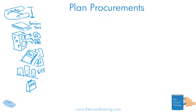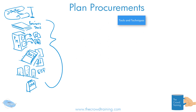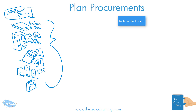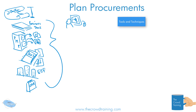Those are the inputs. Now let's move on to the tools and techniques. We have to figure out what is going to make sense for a particular project and the procurement need. So we need to gather some data and look things up. I'm drawing somebody at a computer looking at the price of things, where to get it, or who can supply it — many different things we could be gathering in our research.